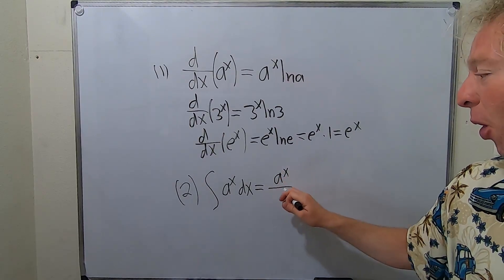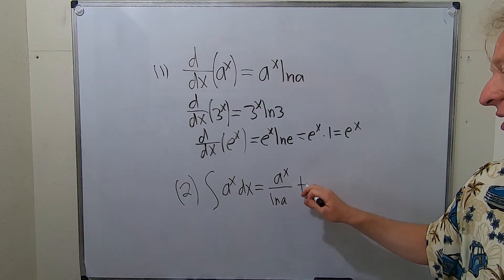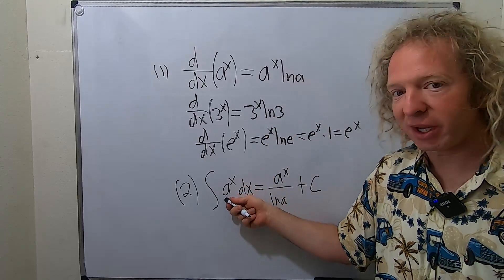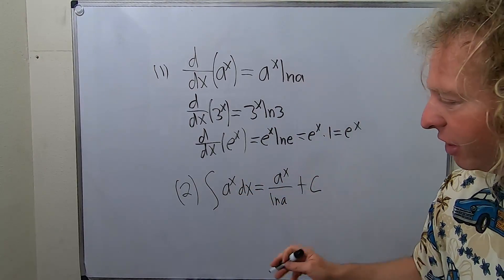So this will be a to the x over natural log a plus c. So when you differentiate, you multiply. When you integrate, you divide. Pretty easy to memorize.